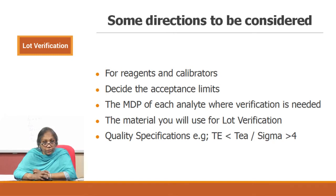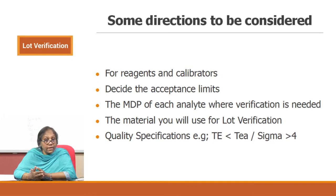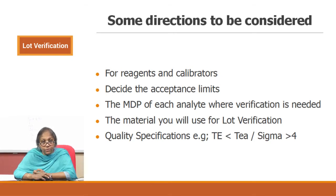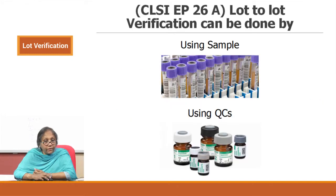The material you will use for lot verification — generally lot verifications are done using samples, but it can be done using quality controls also. Finally, you need to say what your acceptance criteria are. Do you want to put quality specifications like total error (TE) and sigma into your acceptance testing format? All these things should be written in your QSP.